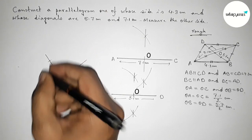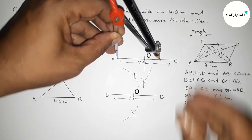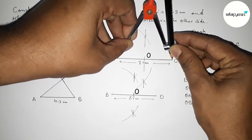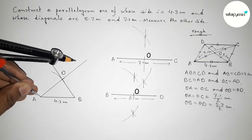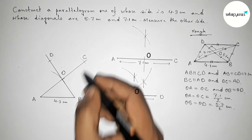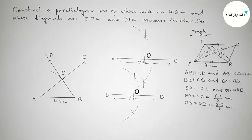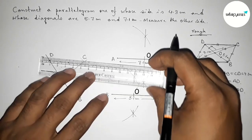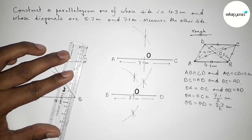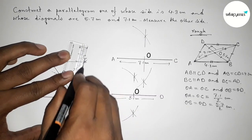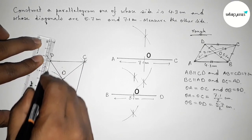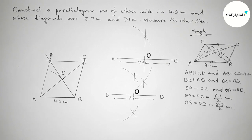Taking the total length BD with the compass and putting the compass on point B, cutting here — so here will be point D. Similarly taking the length AC of 7.1 cm and putting the compass on point C, cutting here to get point C. Now joining the sides: first CD, then BC, and lastly AD.